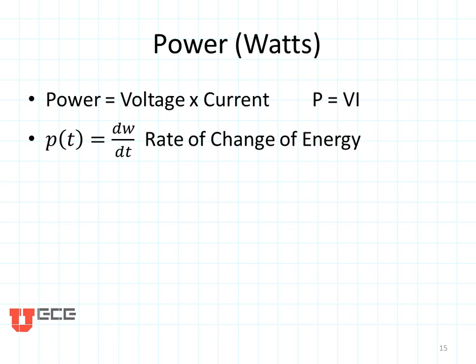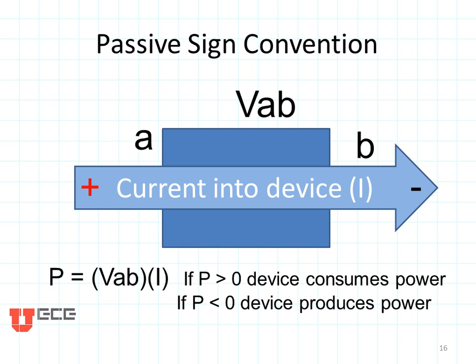Now let's talk about power. Power is given in watts — that is voltage times current, so watts equals volts times amps, and P equals VI. Power is also the time rate of change of energy: dW/dt, where W is energy, gives power as a function of time.